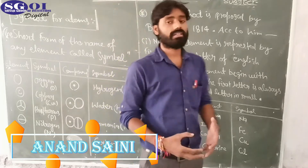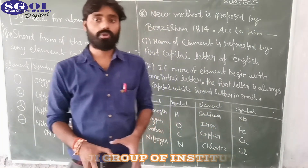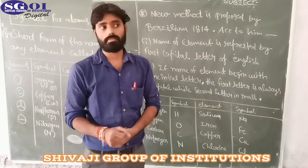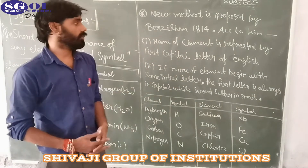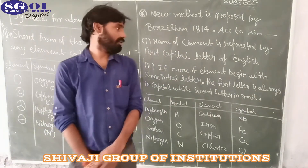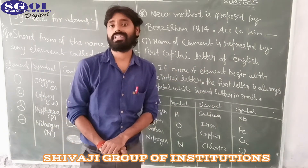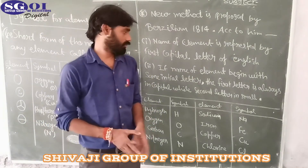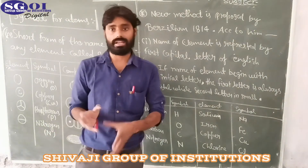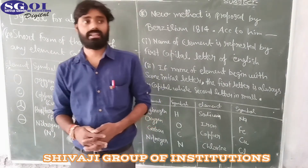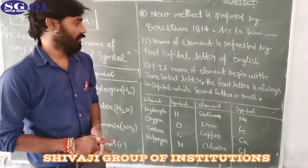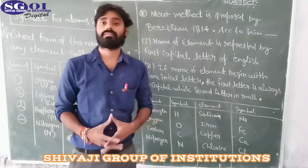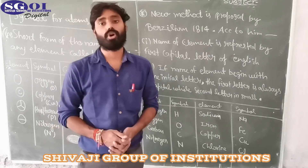Dalton represented some elements, but nowadays the proposed formula is given by Berzelius. Today we use the method given by Berzelius in 1814. According to him, the name of the element is represented by the first capital letter of the English name. If two elements share the same initial letter, we use a second letter to distinguish them. Look at the table here.